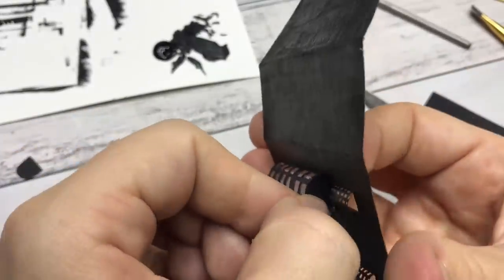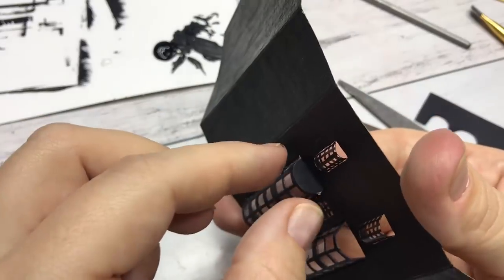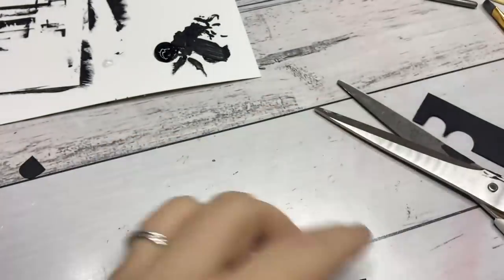With that done I glue half circles cut out of black cardstock to the top and the base of the domed windows to finish them.